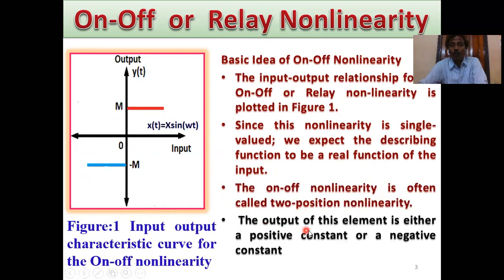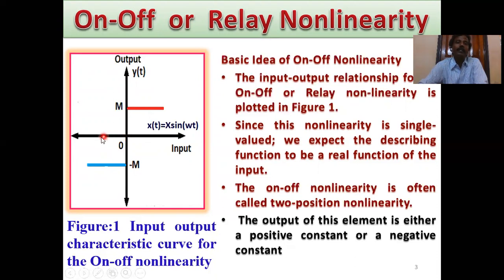The output of this element is either a positive constant or negative constant — this is the positive constant output, this is the negative constant output. For any positive input, that means x(t) > 0, the output is always positive, and when x(t) < 0, the output is negative.